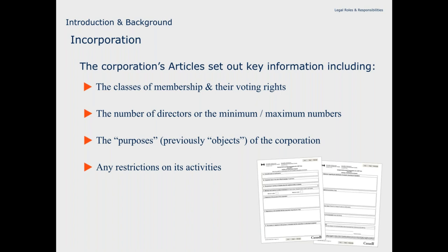We have a question: Where would it say in the articles if an organization is incorporated under the CNCA or OCA? It would typically be on the very form in front of it, because that form will either have been issued by the feds or have been issued by Ontario. Thank you.